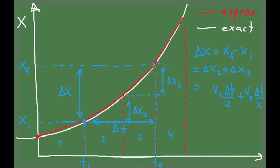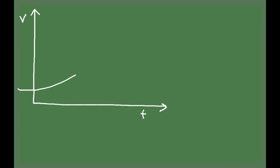The important thing here is that this would work, provided that we choose the velocity in each interval in such a way that it satisfies the condition that the area under the constant velocity curve matches the area under the actual velocity versus time curve. But is there any other way to figure out the displacement without having to find these velocities and satisfy this area-matching condition, which seems a little bit complicated?